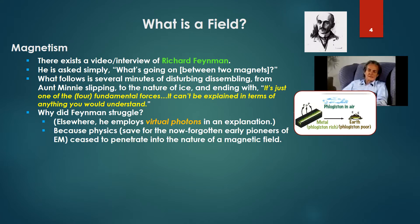So why did Feynman struggle? In another book he gives magnetism a shot by describing it in terms of virtual particles. Unfortunately, virtual particles are not much more than phlogiston, used by current theorists, by which one can explain just about anything. Rather, I would say it's because physics, save for the now-forgotten early pioneers of electromagnetism — Tesla, Steinmetz, Heaviside — has ceased to penetrate into the nature of a magnetic field.